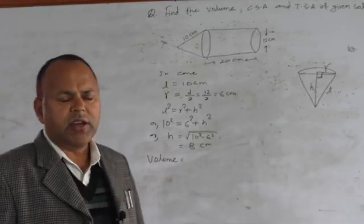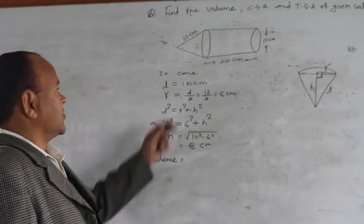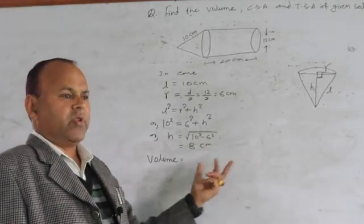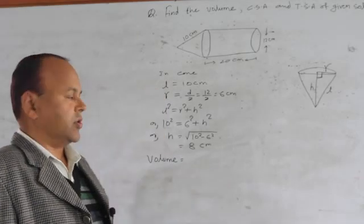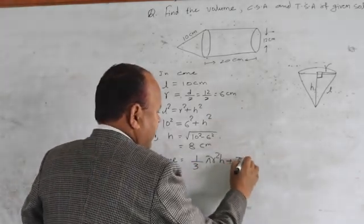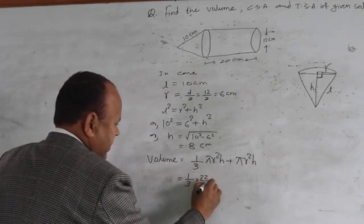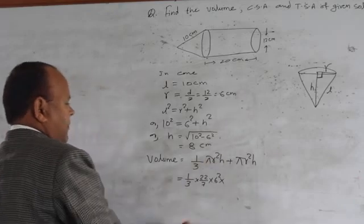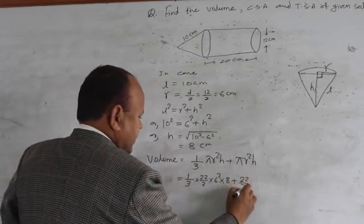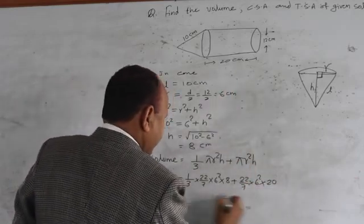To find the volume of any combined object, we find the sum of the volumes of the different objects. Here cylinder and cone are combined, so volume = volume of cone + volume of cylinder. Volume of cone is (1/3)πr²h, plus volume of cylinder is πr²h. Substituting: (1/3) × (22/7) × 6² × 8 + (22/7) × 6² × 20.